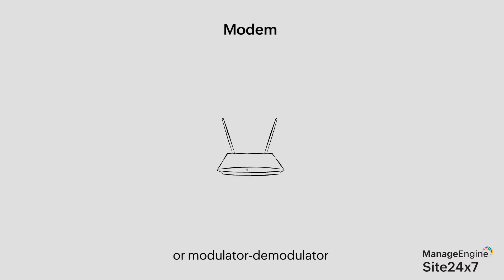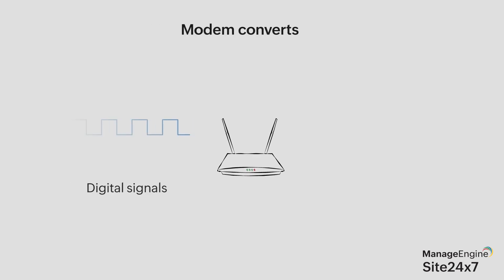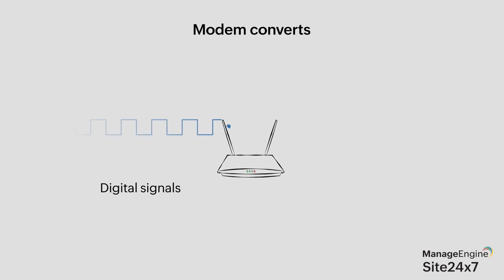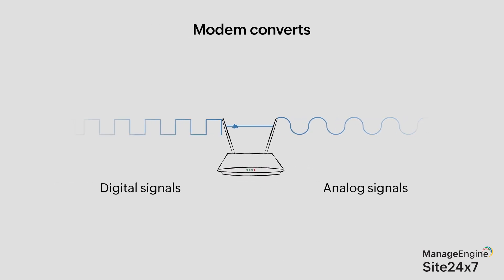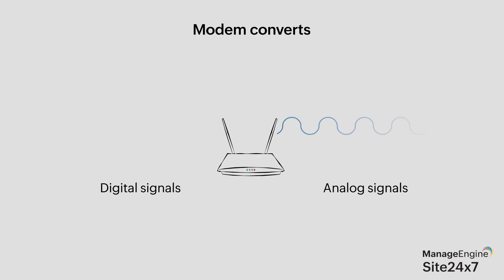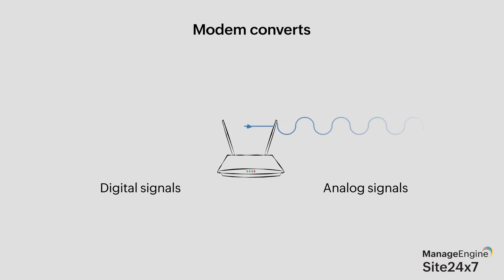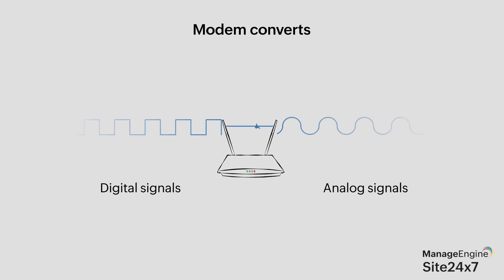First, the modulator-demodulator, or the modem as it's more commonly called. A modem converts the digital signals sent by the computer into analog signals and transmits them via a telephone line. It also receives analog signals from other computers and converts them into digital signals for your computer to understand and display the relevant data.